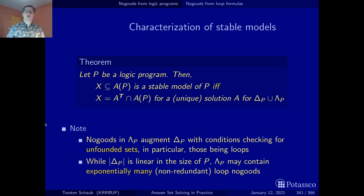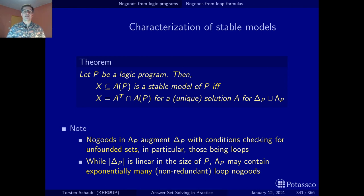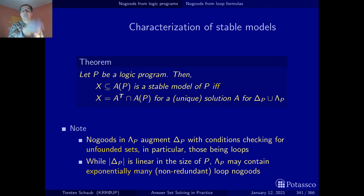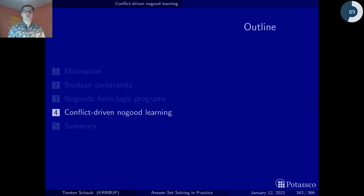Size matters: while the completion no-goods are linear in the program in terms of atoms and rules, the loop no-goods may contain exponentially many non-redundant loop no-goods. In the algorithms, we handle this by compiling the completion no-goods upfront, but for the loop no-goods we are lazy. We use a dedicated algorithm called an unfounded set checker, which checks for unfounded sets and only when it finds one, it spits out the corresponding loop no-goods and adds them lazily to the logic program. This was a sneak preview of the next session.